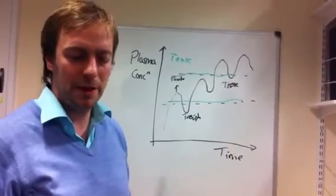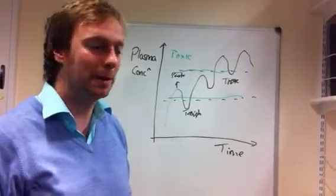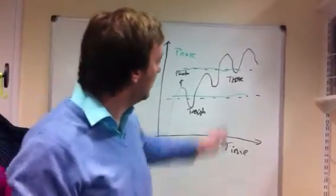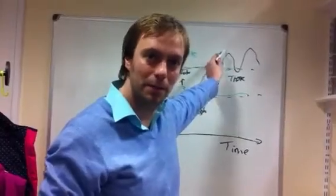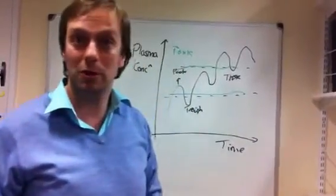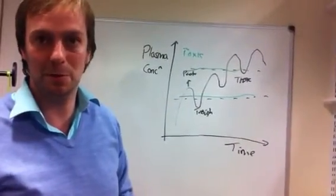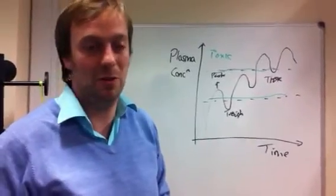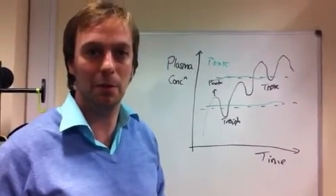So what do you do if the plasma levels are in the wrong place then? Okay, so let's say we have a peak level in the toxic regime. All we have to do is reduce the dose. So say we're administering 500 milligrams four times a day, we'd reduce that to say 300 milligrams four times a day.